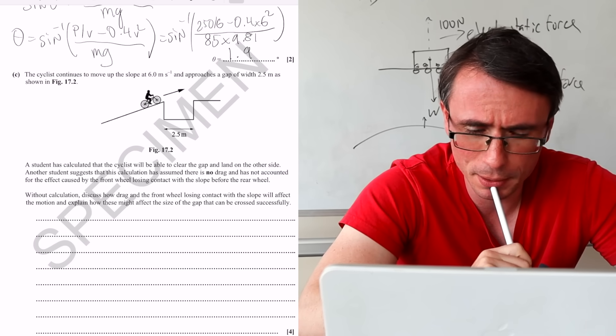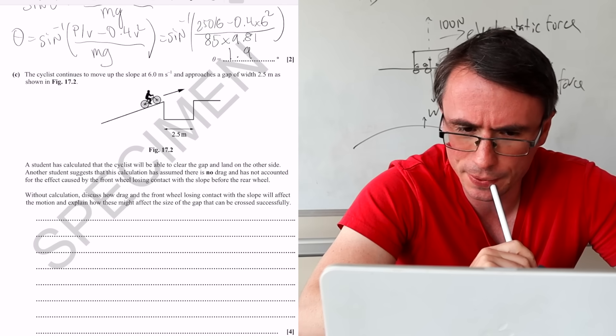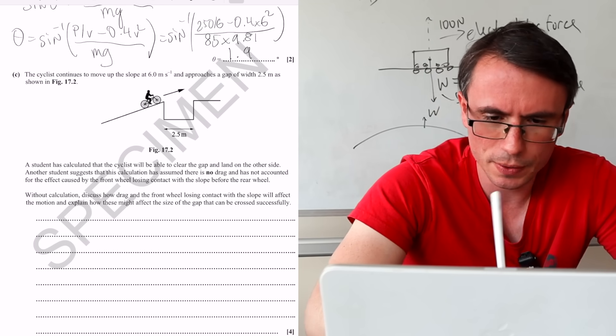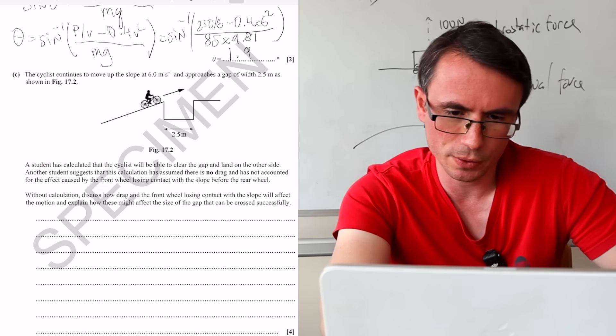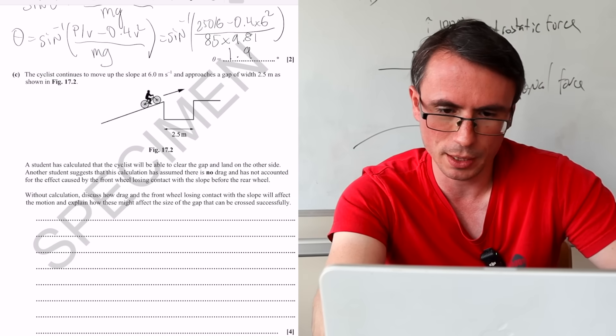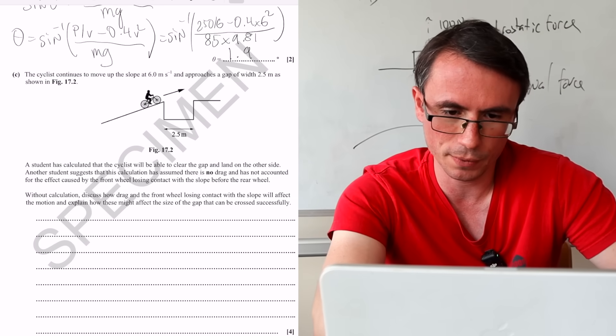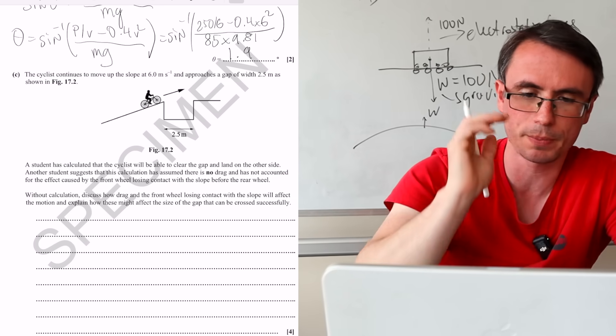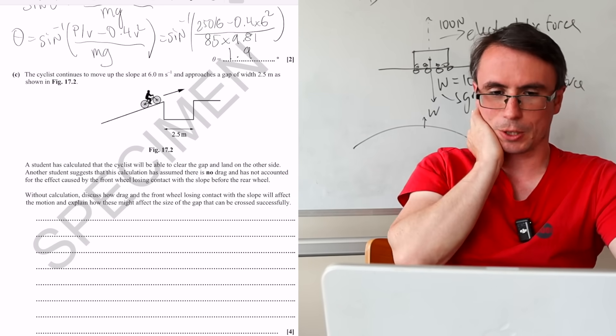A student has calculated that the cyclist will be able to clear the gap and land on the other side. Another student suggests that this calculation has assumed there is no drag and has not accounted for the effect caused by the front wheel losing contact with the slope. Without calculation.